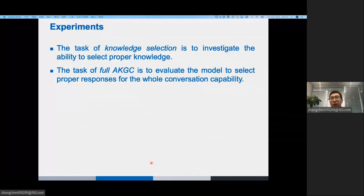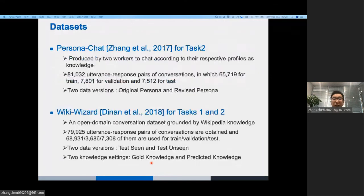Now, we talk about the experiment. We evaluate our model on two tasks. The first task, knowledge selection, is to investigate the ability to select proper knowledge. The second task, full AKGC, is to evaluate the model to select proper responses for the whole conversation capability. We have two datasets. The first one is called personal chat. The second one is called wiki wizard. When using the datasets, we exactly follow the settings defined in their original papers. Please see our paper for the detailed information.